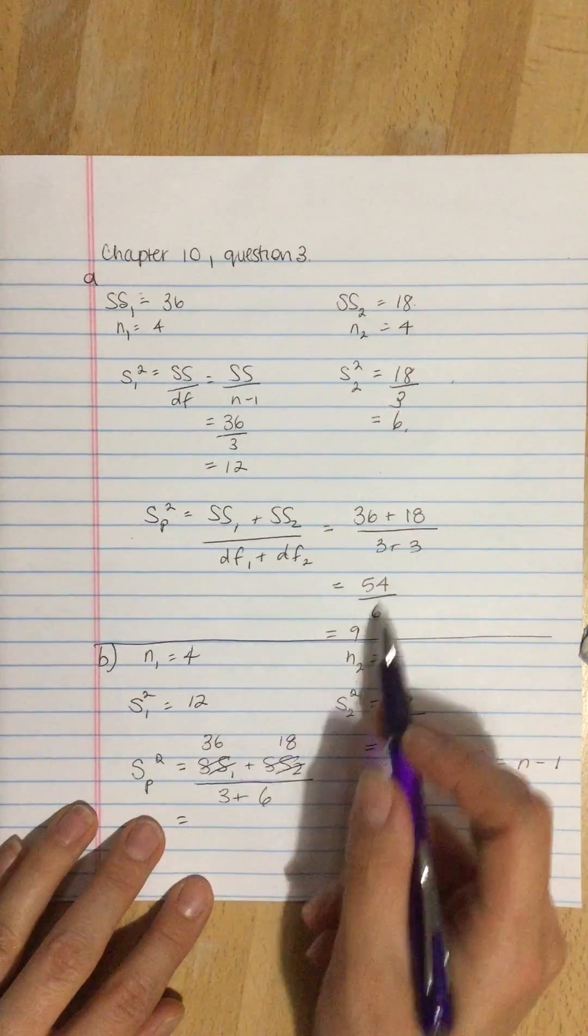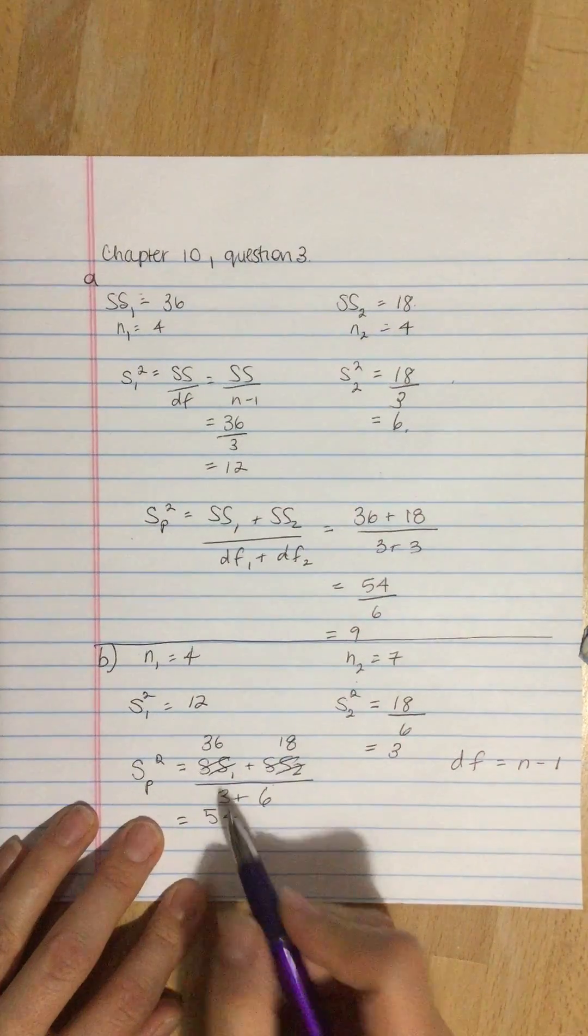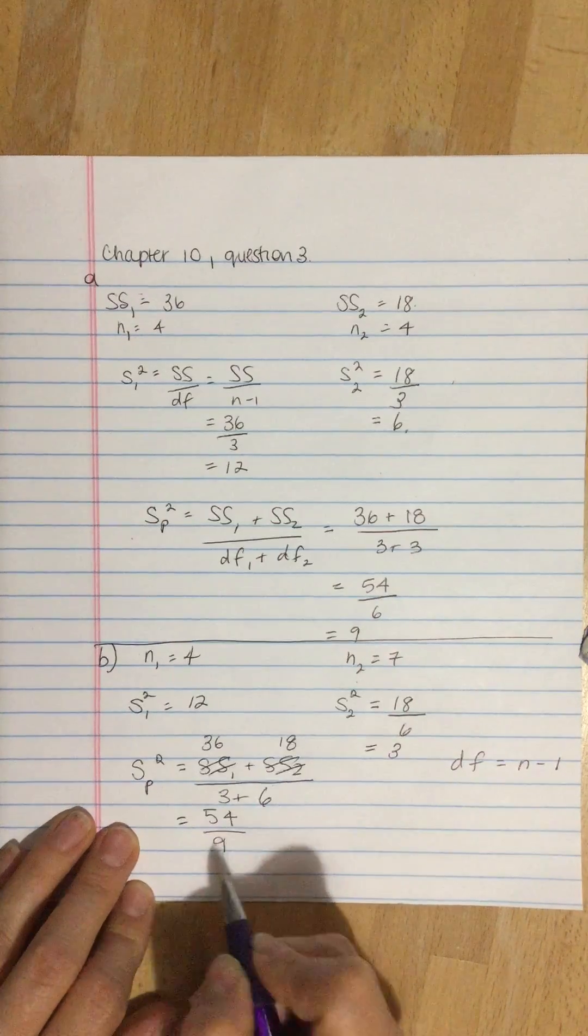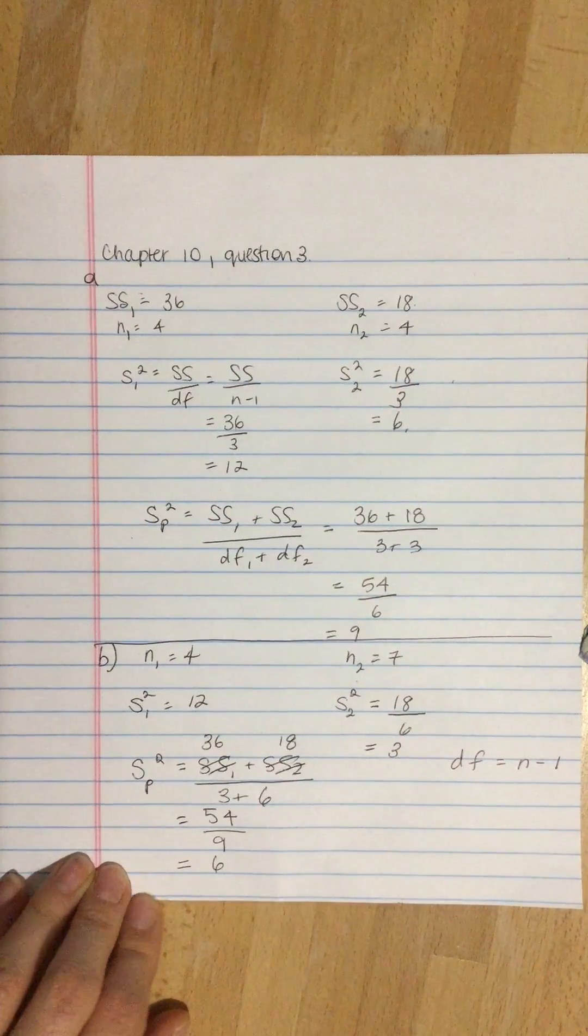So on top, we've got again 54, because the sum of squares haven't changed. What has changed is the sample size, divided by 9, which is equal to 6. And lo and behold, just as predicted in the question, the pooled variance is closer to the variance of the sample that has the larger sample size.